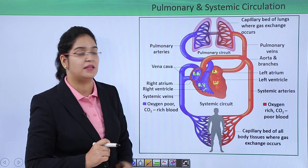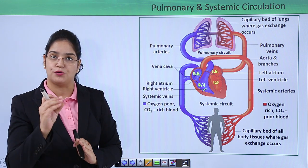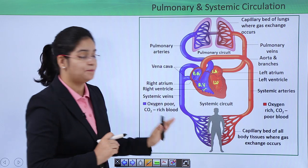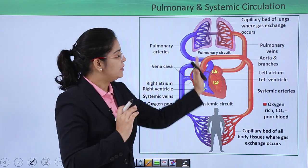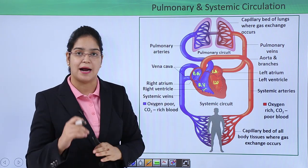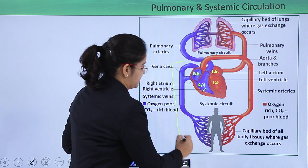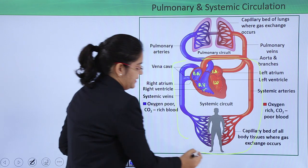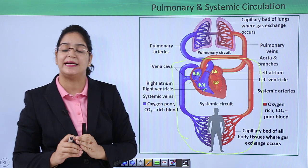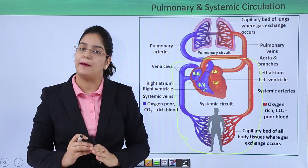This deoxygenated blood returns to the heart's right atrium through veins — via the superior vena cava, inferior vena cava, and coronary sinus. So this is one system in which purified blood moves throughout the body and deoxygenated blood comes back to the heart. Together, the systemic circulation and the pulmonary circulation form what is called a double circulation.